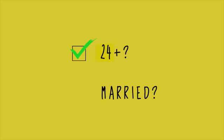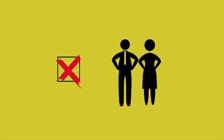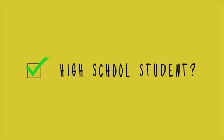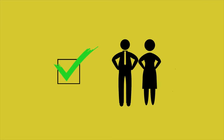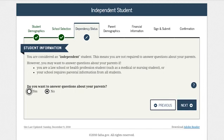If you're at least 24 years old or married, you will not need parental information. However, if you're a high school student or recently graduated, chances are you will need information from your parents. The FAFSA has a section that determines if parental information is needed.